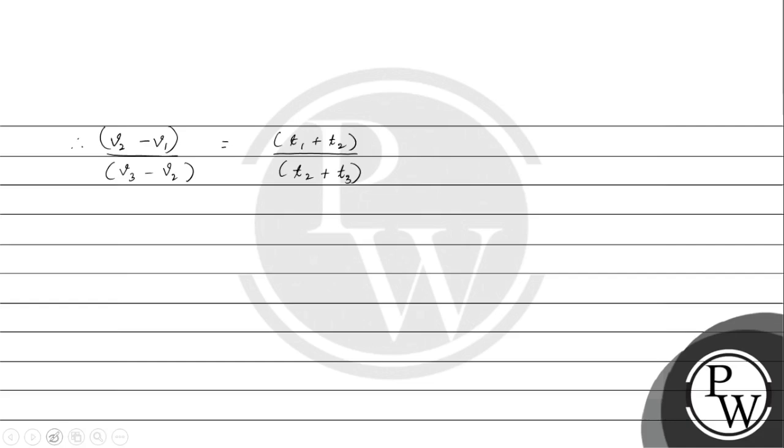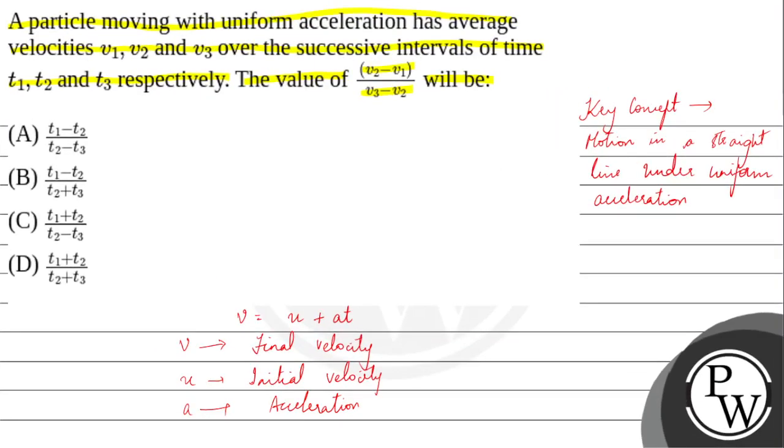Now going back to the question and marking the correct option. The value of v2 minus v1 divided by v3 minus v2 will be - the correct answer is option D, it is equal to t1 plus t2 divided by t2 plus t3.